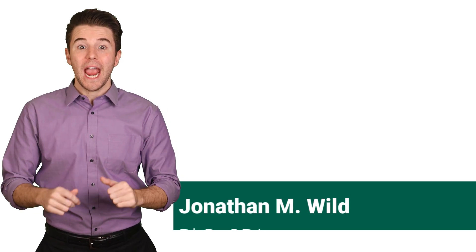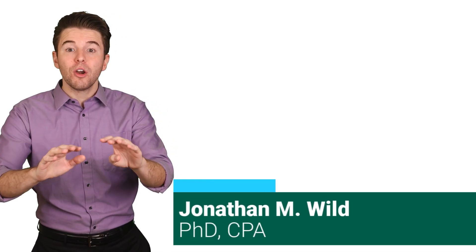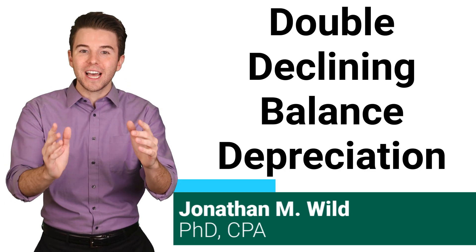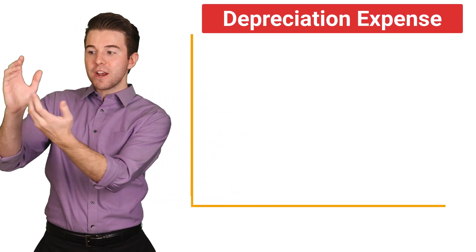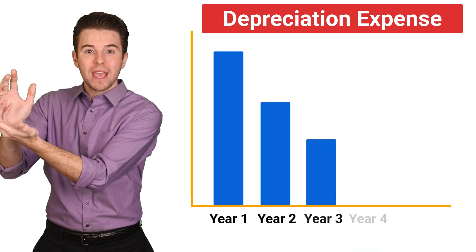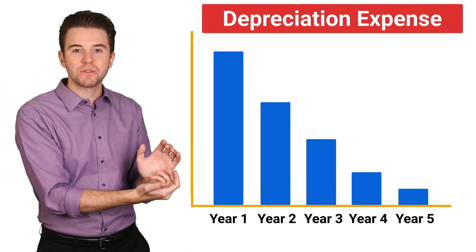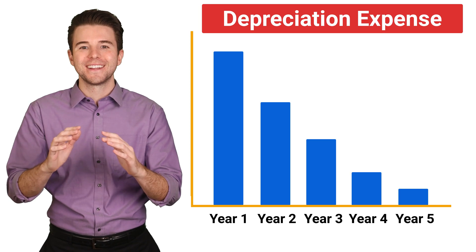Hi, I'm Jonathan Wild, and we are going to cover how to compute depreciation using the Double Declining Balance method. It is called Double Declining Balance because the depreciation rate is double the straight-line method rate. This results in higher depreciation early on and lower depreciation near the end of the asset's useful life.